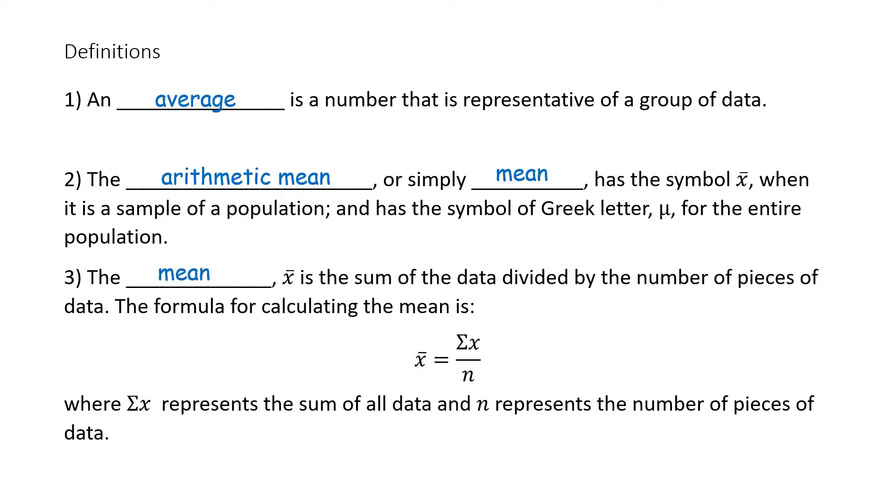The mean, x-bar, is the sum of the data divided by the number of pieces of data. The formula for calculating the mean is represented as x-bar equals sigma x divided by n. Sigma x represents the sum of all data. It is often read summation and n represents the number of pieces of data.